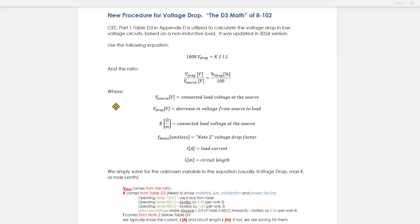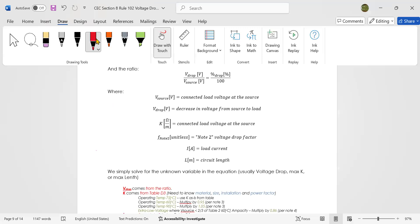In order to do the voltage drop calculations, the new method, you have to use table D3 in Appendix D. And that's how you calculate voltage drop. Now, let's organize it a little bit nicely, like regular math.